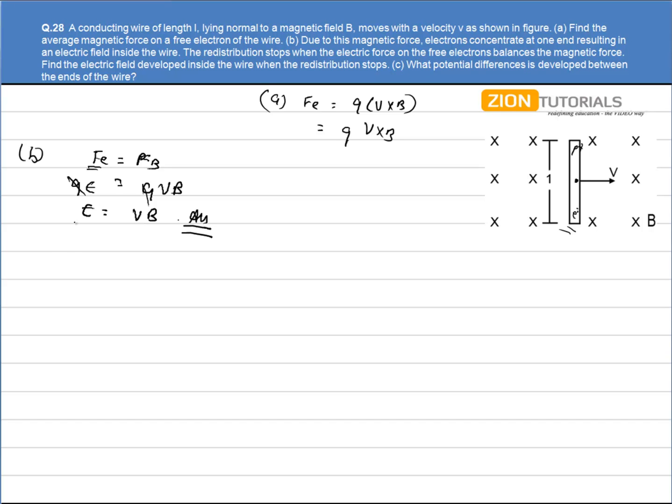In the third part, calculate the potential difference developed between the ends of the wire. The potential difference is given by E into D. We know the electric field, so potential will be equal to BVL. This is what we call the motional EMF. When the rod is set into motion in a magnetic field, the motional EMF is generated across its end, and this is the magnitude of the motional EMF: BVL.